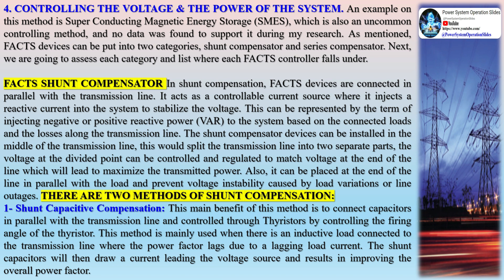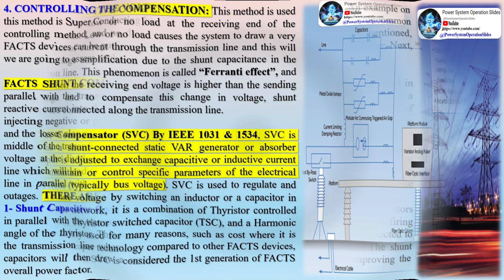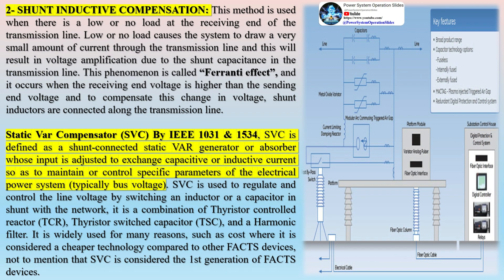Another method involves controlling both the voltage and the power of the system. An example is superconducting magnetic energy storage (SMES), which is also an uncommon controlling method and no data was found to support it during research. As mentioned, FACTS devices can be put into two categories: shunt compensators and series compensators. Next, we will assess each category and list where each FACTS controller falls under.